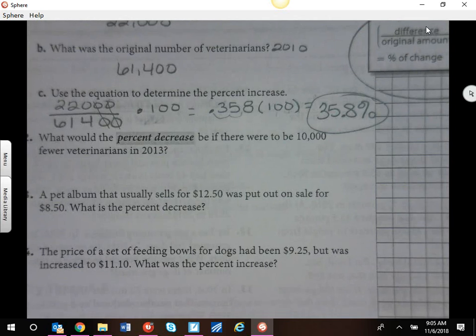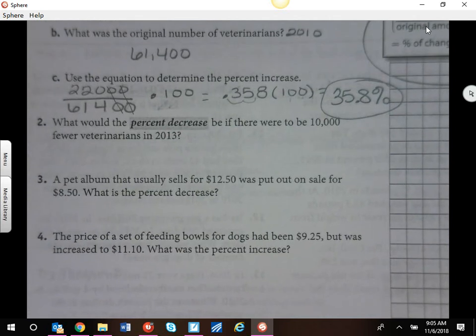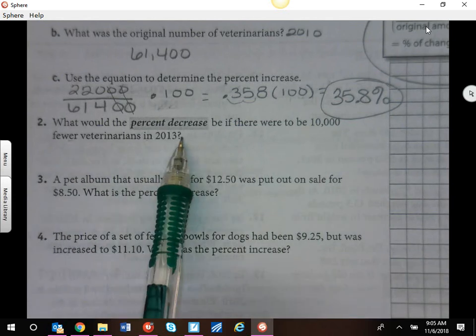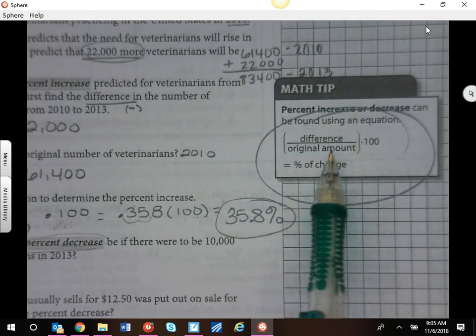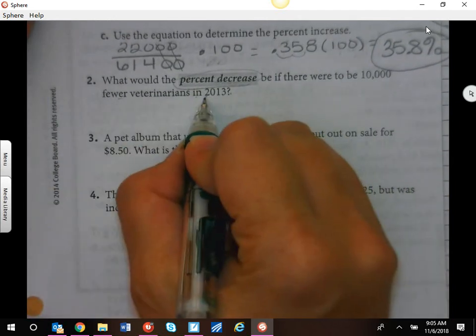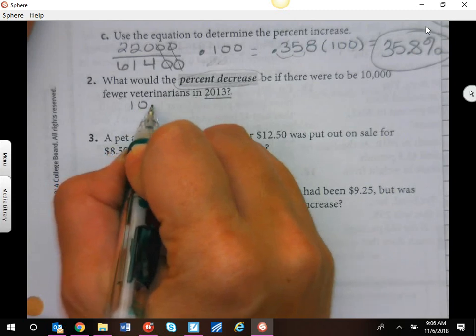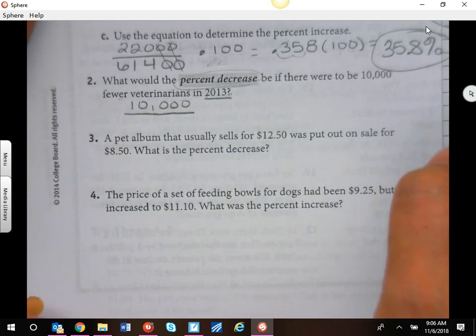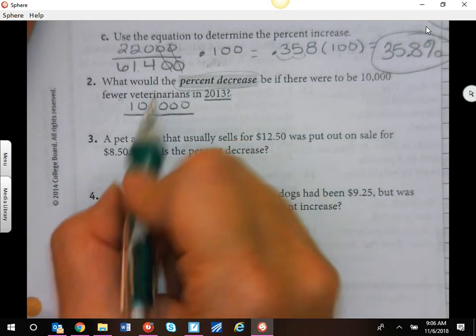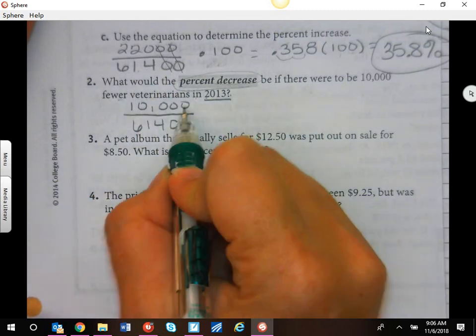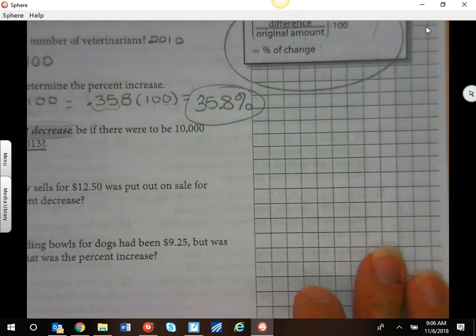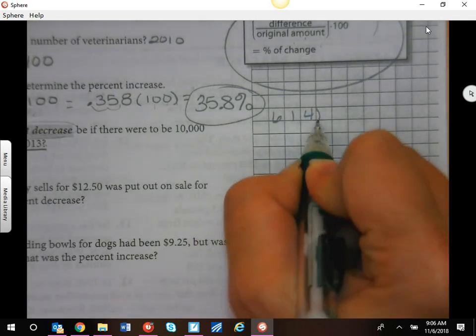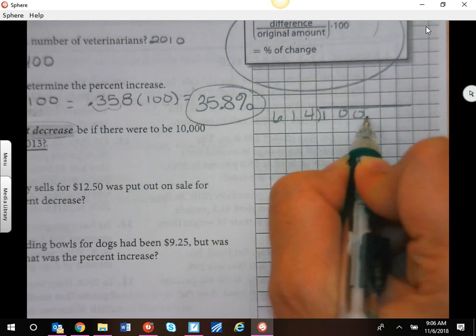We can do the same thing with decrease. If there will be 10,000 fewer veterinarians in 2013, what is that decrease? This is always the same formula: the difference. It's telling us the difference is 10,000, because it's fewer. So 10,000 over our original. Our original was still 61,400. We're going to have to do some division. I'm going to come over here to the margin.